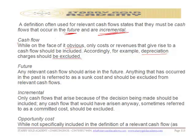The second condition is that relevant cash flows must arise in the future. Anything that has occurred in the past is known as a sunk cost. The cost of an experiment, the cost of research and development — all those things that occurred in the past are part of the sunk cost and are never relevant cash flows. The incremental condition is another factor to determine whether a cash flow is relevant or not.